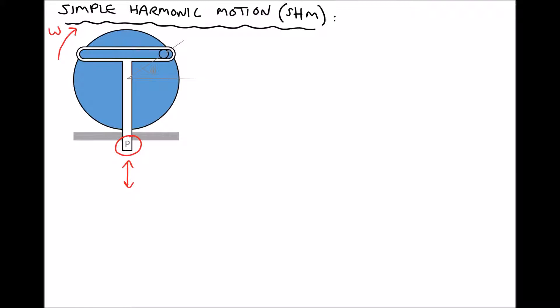By definition, simple harmonic motion is when a particle is constantly being accelerated back to a centre point. If we consider point P and we have a centre line, then point P is going to move downwards away from its centre line, then backwards past its centre line, and then back towards its centre line. The acceleration is always back towards that centre point, meaning the force acting on the yoke is also always acting towards that centre line.